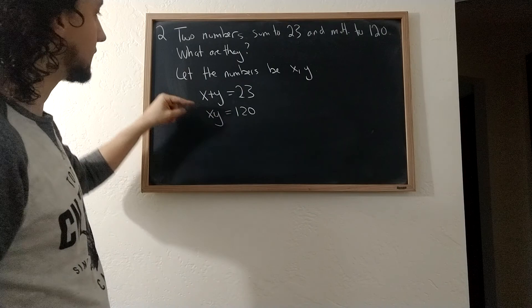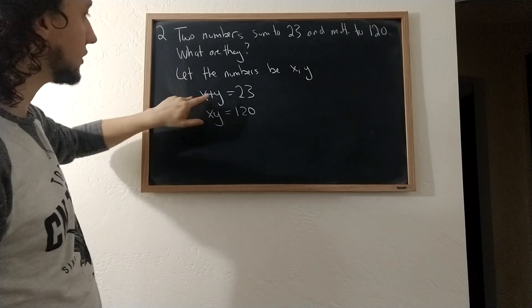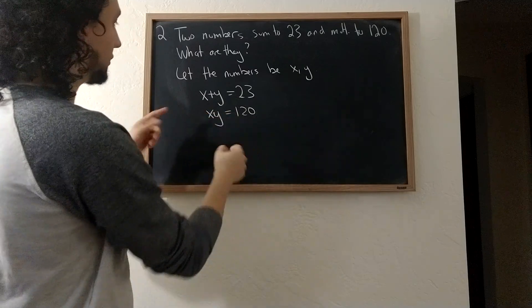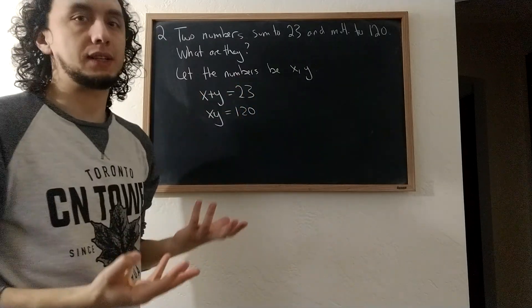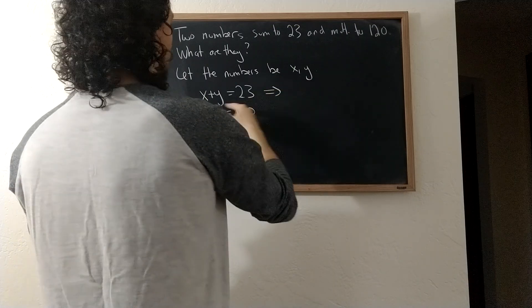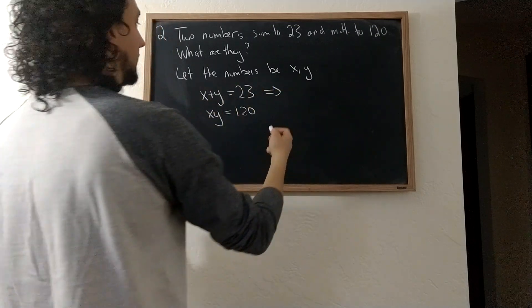What can I do with this? Well if I have two equations and two variables, each equation individually is difficult to work with. With x plus y equals 23 I can't solve for x, but I can solve for either variable in terms of the other.